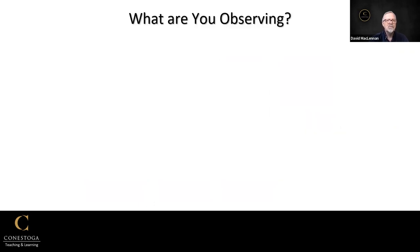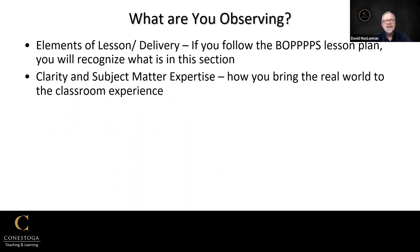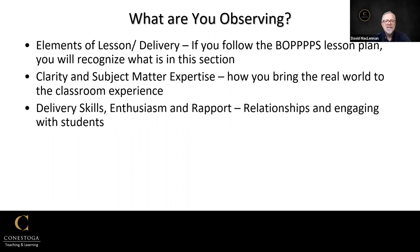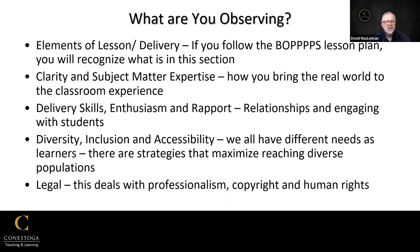So what are we looking for? We're looking for elements of lesson and delivery — if you follow the Bob's lesson plan template, you'll recognize what's in this section. We're looking for clarity and subject matter expertise, how you bring the real world into the classroom experience, your delivery skills, enthusiasm and rapport, and the relationships and how you engage with students. We also look at diversity, inclusion, and accessibility, as there are strategies that maximize reaching diverse populations. And we look at the legal aspects, which deals with professionalism, copyright, and human rights.